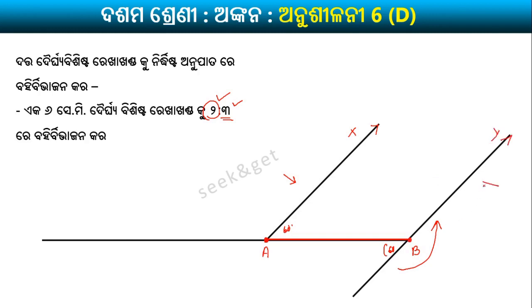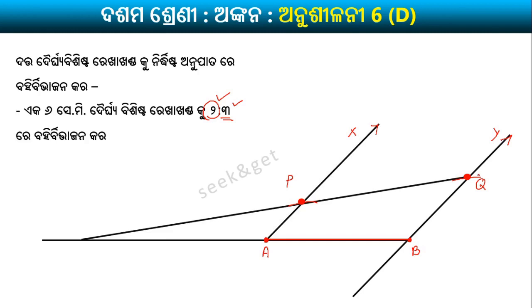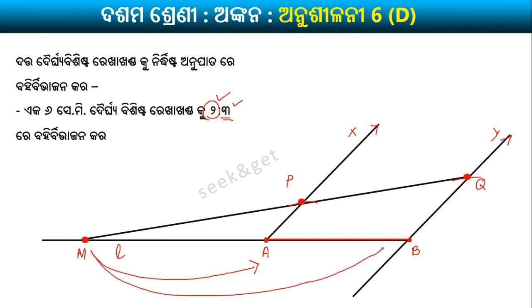On ray BY, we also cut an arc. Now we have 2+3 = 5 intersection points in total. One set is labeled P, another is labeled Q. We join these corresponding intersection points. The ratio AP to PB is 2 is to 3. This confirms the 2:3 division.